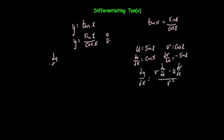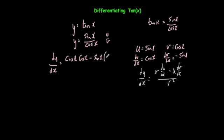So dy/dx would be equal to v — well, v is equal to cos x — times du/dx — well, du/dx is equal to cos x as well — minus u, where u is equal to sin x, times dv/dx which is equal to minus sin x. And that's all over v squared, which would be cos squared x.